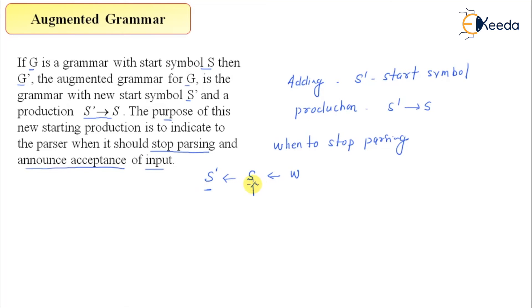And now the parsing process will stop when S will be reduced to S'. So one more, one final reduction. You reduce W to S and then one more step where you finally reduce to S'. Because this is the added one, not a part of the original grammar. When this reduction occurs, the compiler or parser will know that this is the final reduction and we have to stop the parsing.